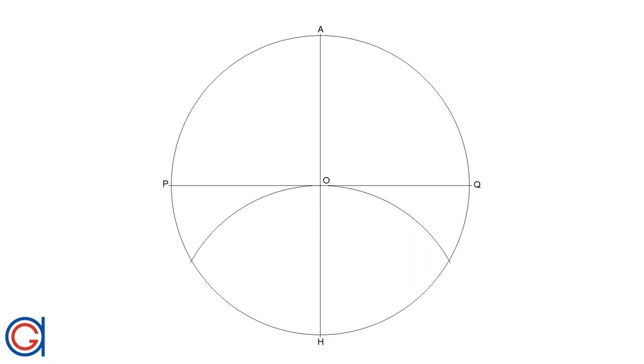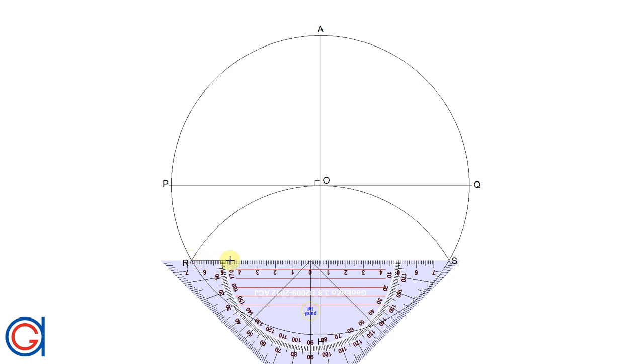The next thing we are going to do is to join these two points R and S with a horizontal line as can be seen here in the video which cuts our vertical diameter at a new point which we will call T.